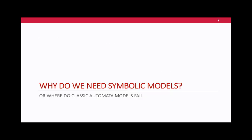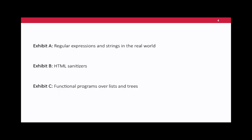Why do we need symbolic models, or where do classic automata models fall short? I'm going to show you three applications that we stumbled upon — this is actually the reason why we started studying these models. Most of the work I present today was done with Margus Veanes. With Margus we were trying to verify and reason about several applications, and we were always stuck because classic finite automata were not working.